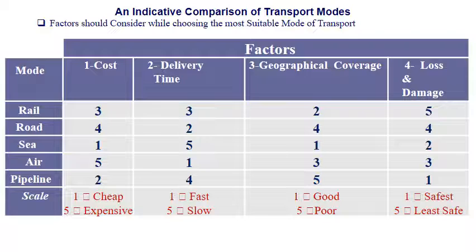For geographical coverage, sea can cover different geographical regions best, followed by rail which covers local markets, then air, then road, and pipeline has the poorest geographical coverage. For losses and damage, pipeline is the safest, then sea, then air, then road, and rail is the least safe.